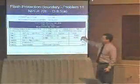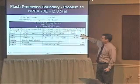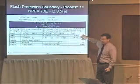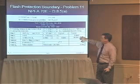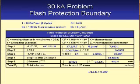Now we multiply all three steps together: step one times step two times step three — 7,443 times 0.0835 times 30.254 — and we get 18,803. We take that number and raise it to the power of one divided by X, which is 1/1.641 or the 0.609 power. That gives us 402 millimeters.